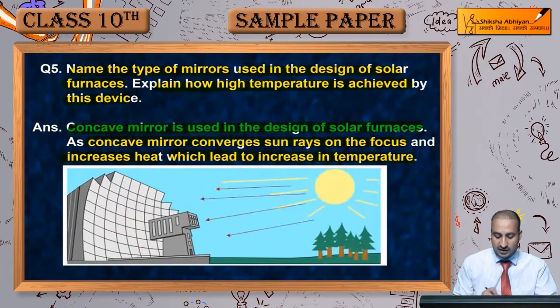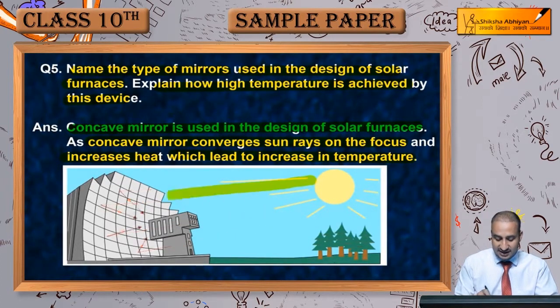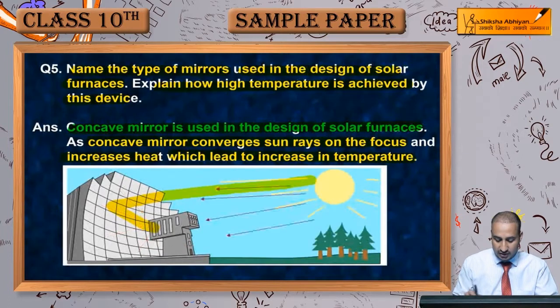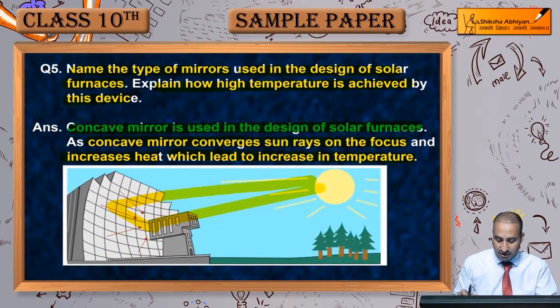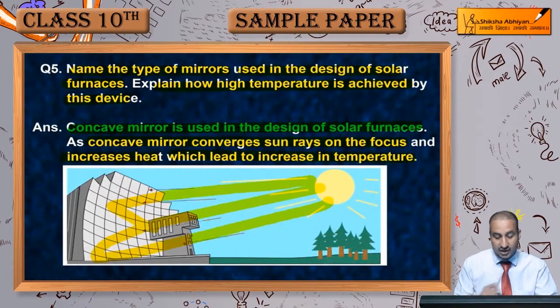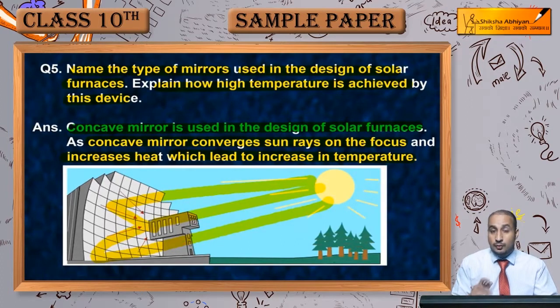Aap dekh sakte hain ki sun rays aa rahi hain aur reflect hone ke baad ek hi direction mein converge ho rahi hain, jisse solar furnace se bahut high temperature achieve kar sakte hain.